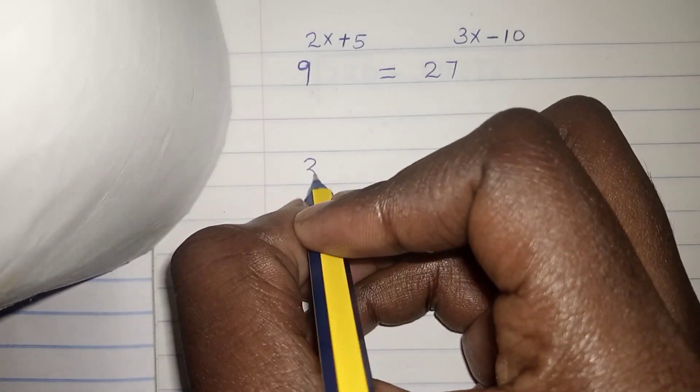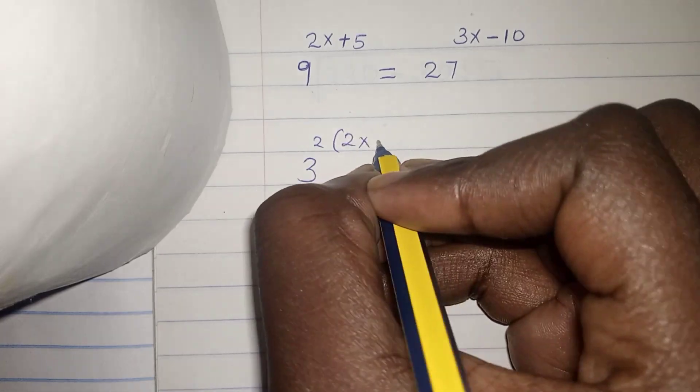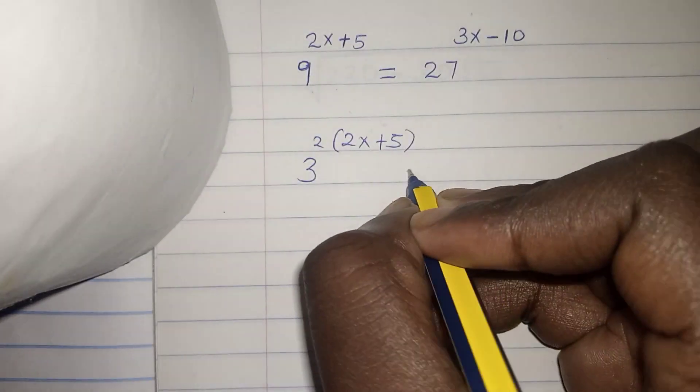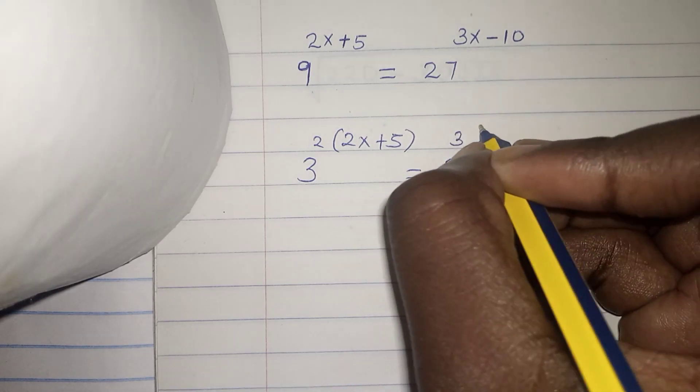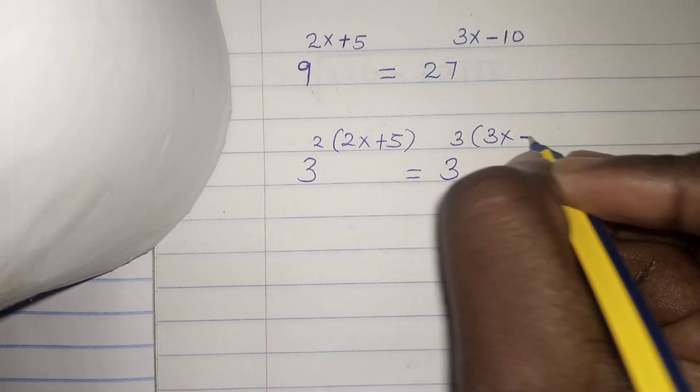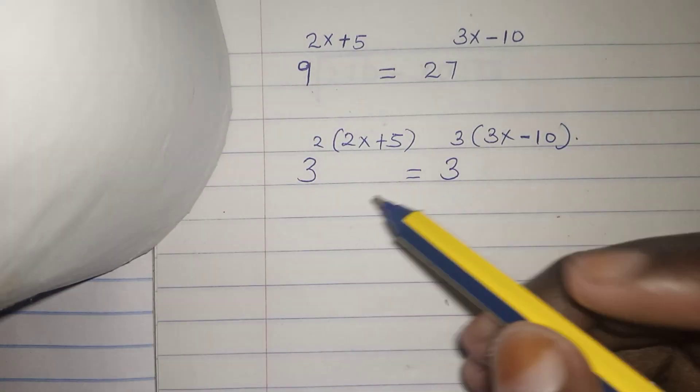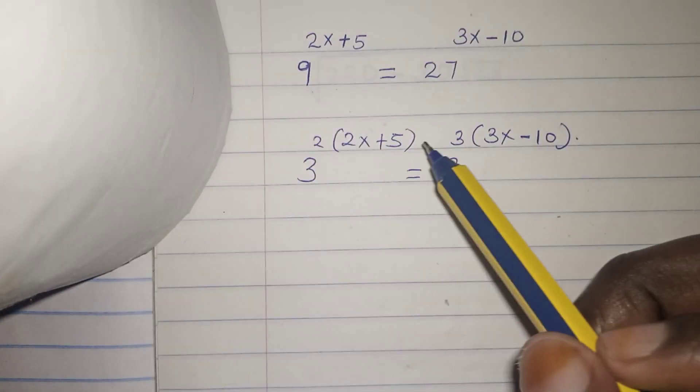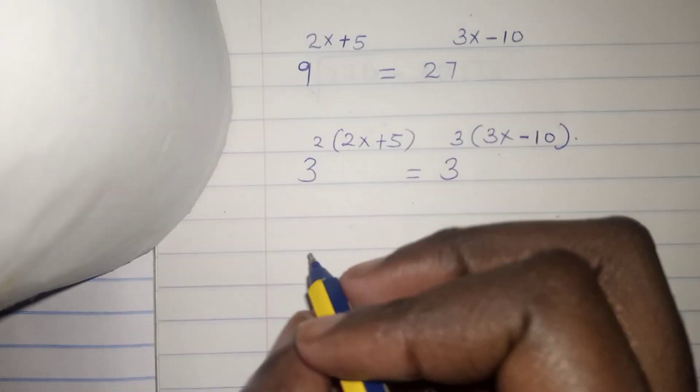9 we can write as 3 to the power of 2, times 2x plus 5, equals 27 which we can write as 3 to the power of 3, times 3x minus 10. So this is very simple. Our bases are the same, we can equate our exponents. When our bases are the same, we equate the exponents.